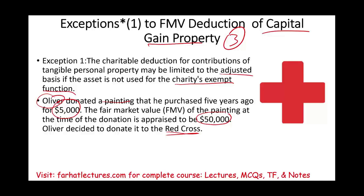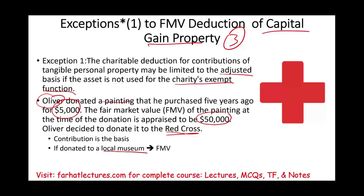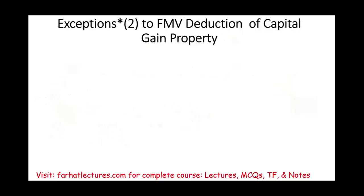Under those circumstances, Oliver's contribution is limited to the adjusted basis of $5,000. Oliver could alternatively sell the painting, pay tax on the long-term capital gain, and donate the after-tax cash proceeds. However, if Oliver donated the painting to a local museum that put it on display, then Oliver can take the fair market value of $50,000 as the deduction. The museum will notify Oliver that the painting will be used for display, and the Red Cross will notify Oliver that they intend to sell it — which determines which deduction amount applies.